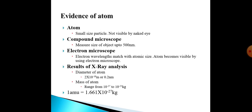We know that atom is very small in size and we cannot see it with our naked eyes. Even a full stop contains millions of atoms. So in order to view an atom, we need a microscope. Microscopes have different types: light microscope, compound microscope and electron microscope.